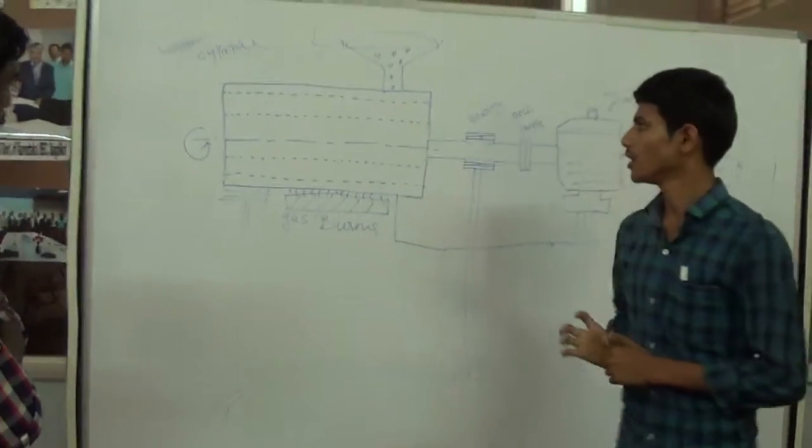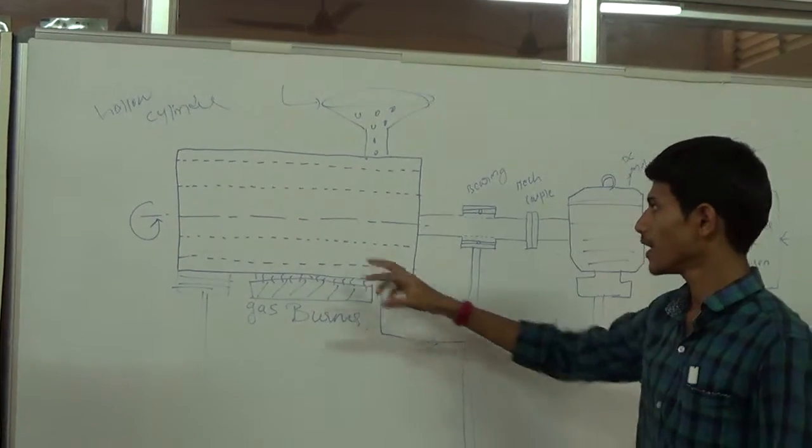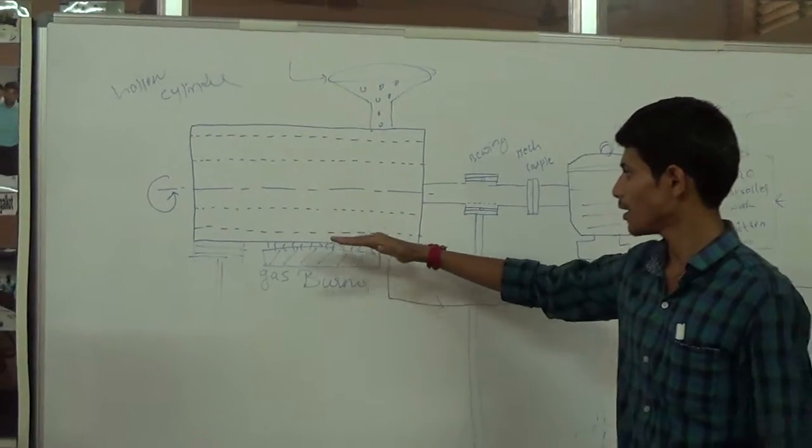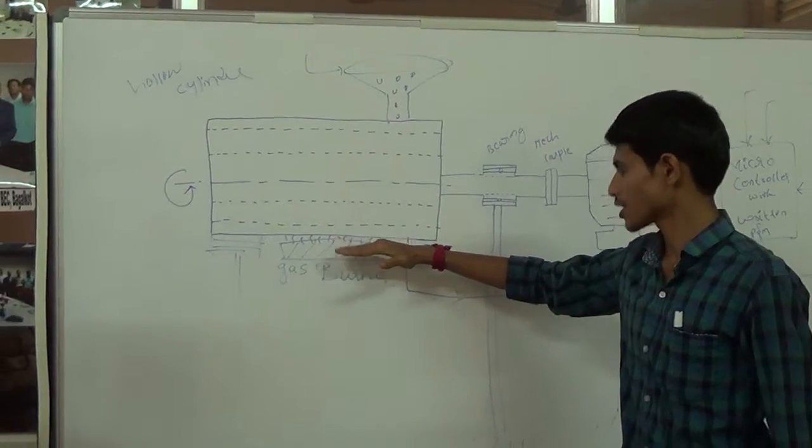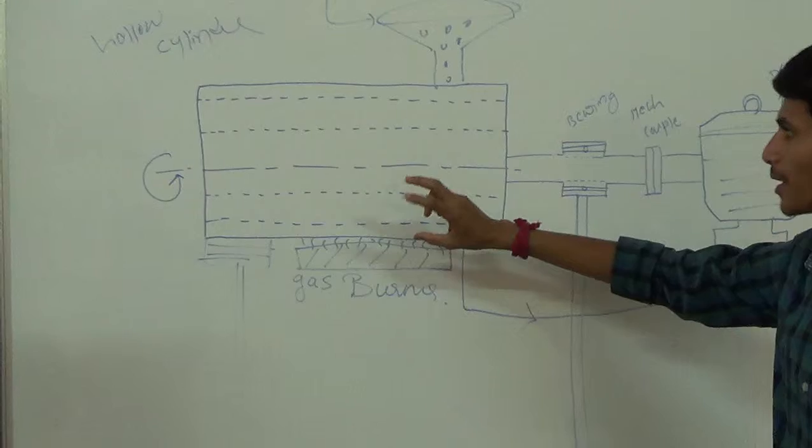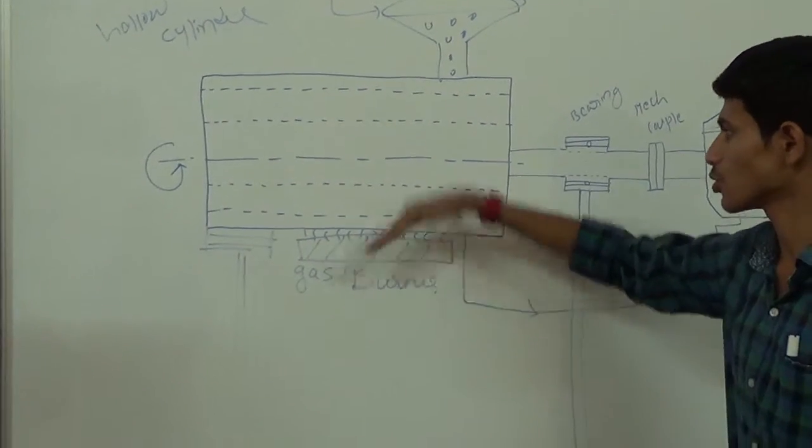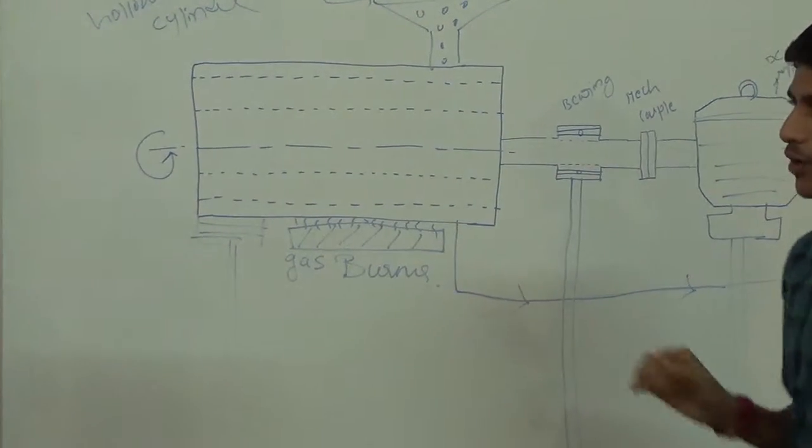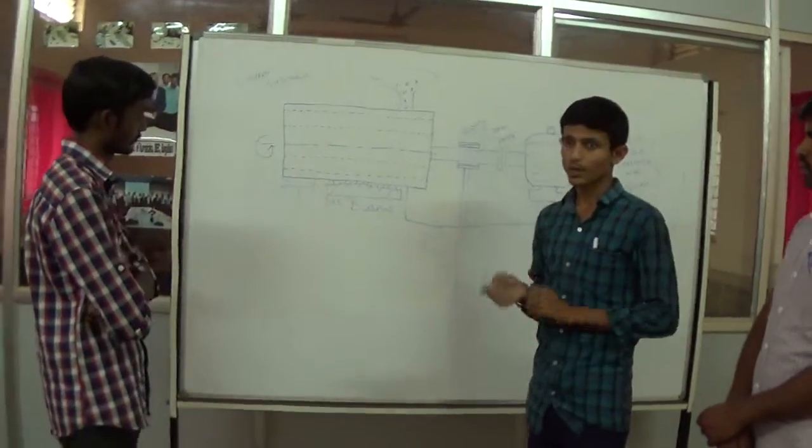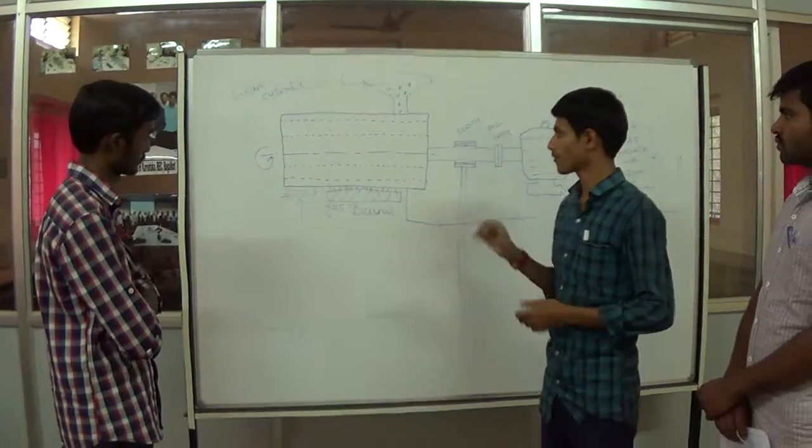Here mainly due to the rotating motion of the cylinder, the paddy rice will take the overall uniform heat transfer. Here from the external source of heat, the conduction takes place from the external thickness of the cylinder. The heat transfers from the external heat source to the paddy rice with uniform temperature. That is why the paddy rice is converted into puffed rice with no loss.